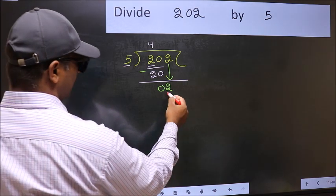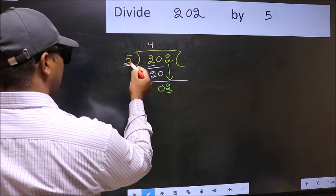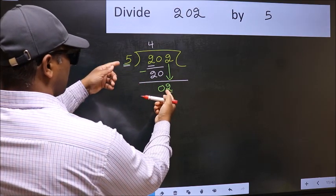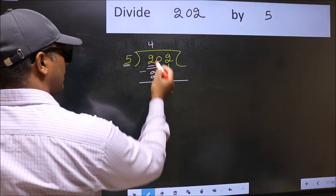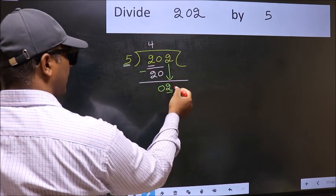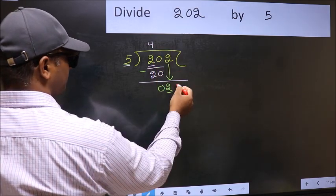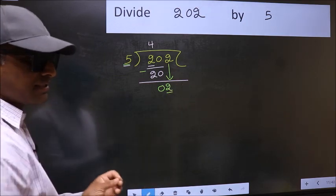Here we have 2 and here 5. 2 is smaller than 5. So what many do is they directly put a dot and take 0, which is wrong.